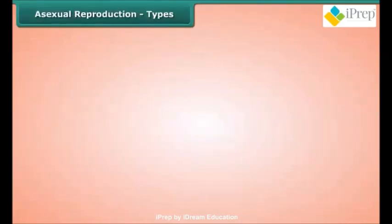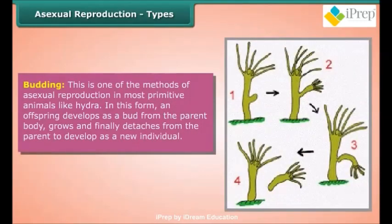Asexual reproduction – Budding: Budding is one of the methods of asexual reproduction found in most primitive animals like hydra. In this form, an offspring develops as a bud from the parent body, grows, and finally detaches from the parent to develop as a new individual.